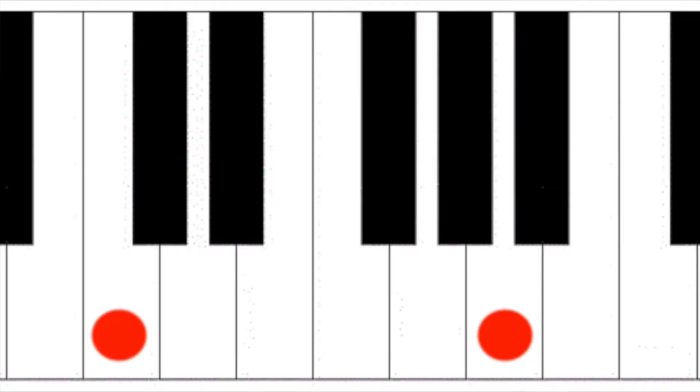Our next interval is at nine semitones: the major sixth. The alto and baritone saxophone, as well as an E-flat clarinet, are transposed by a major sixth.